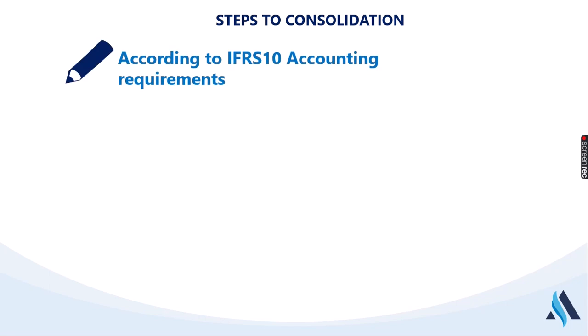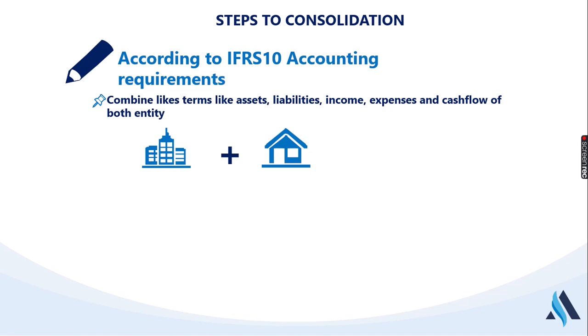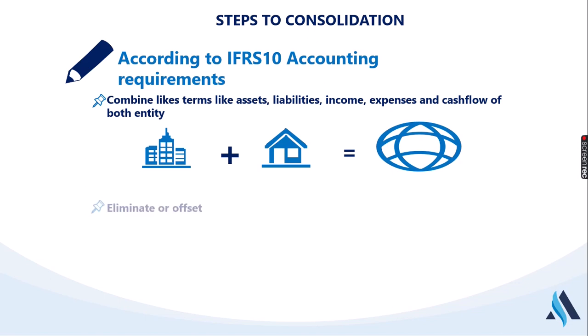IFRS 10 gave three of those steps. The first step says: combine like things — like assets, liabilities, income, expenses, and cash flows of both entities. This is something that is very easy. If I want to consolidate the parent company and the subsidiary company, I add the assets of both companies together, I add the liabilities of both companies together — income and expenses — to get the total assets of the group.